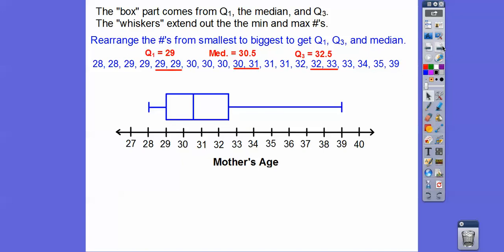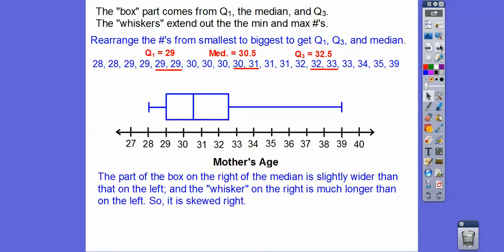Now can you see that this side is a little bit bigger than this side? And definitely this whisker is longer than this whisker? Well, that just tells me that this data is skewed to the right. Remember, this is the median right here. This is quartile one. This is quartile three. This is the smallest number. This is the biggest number.